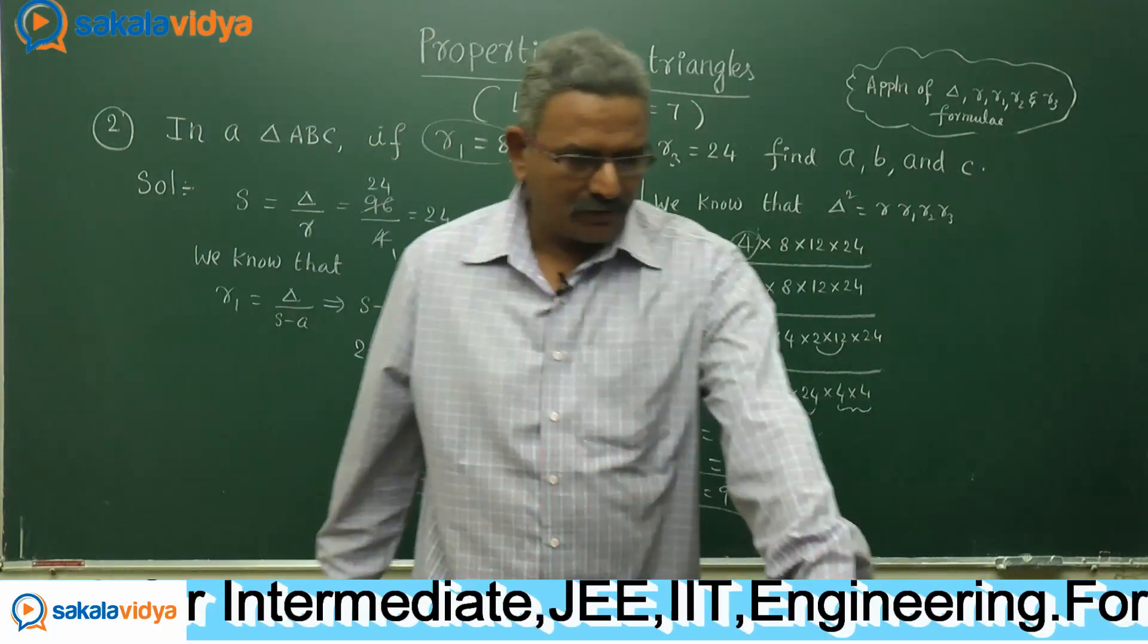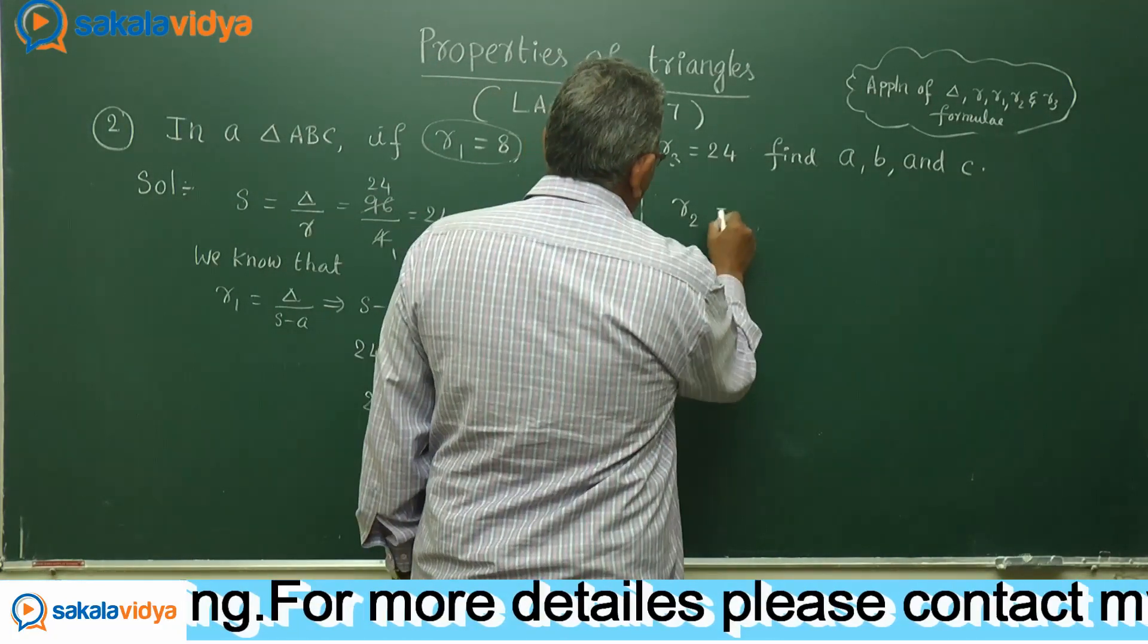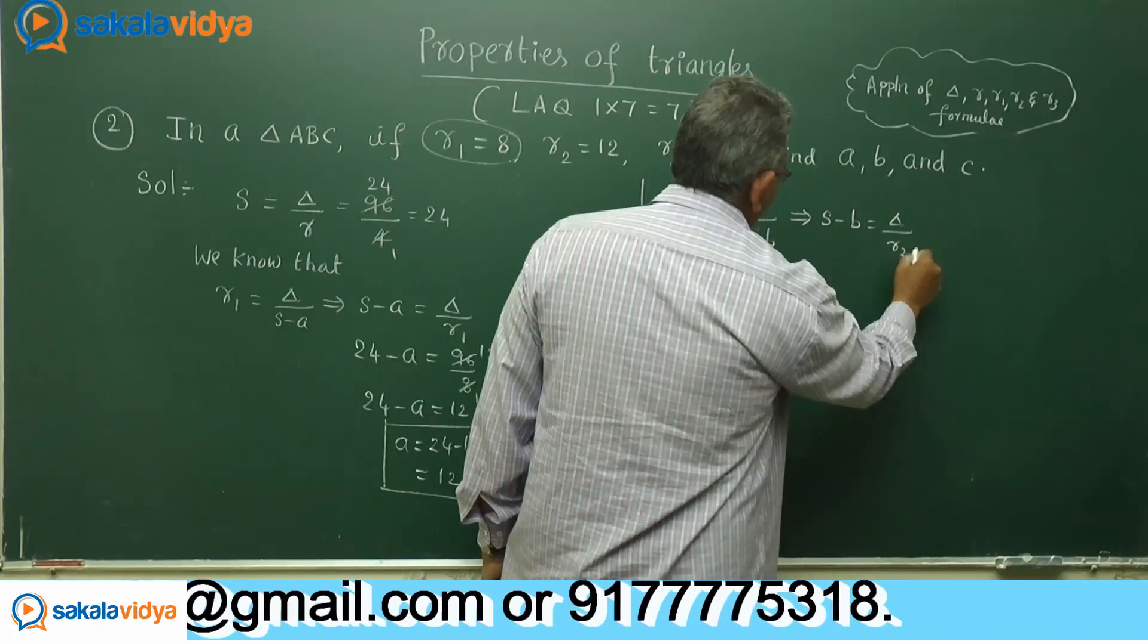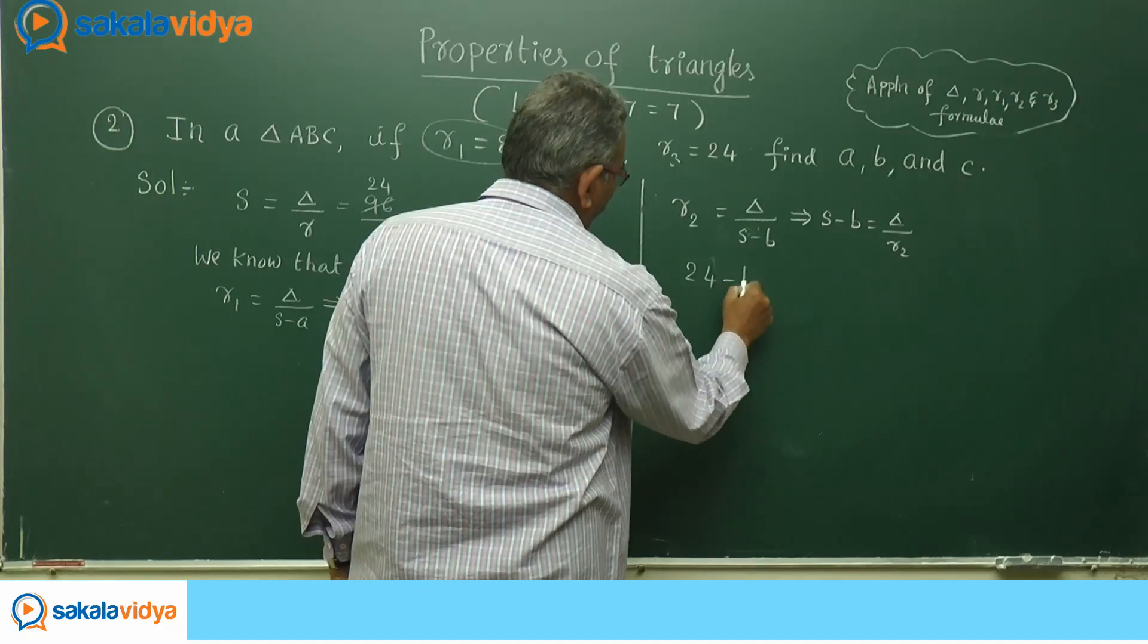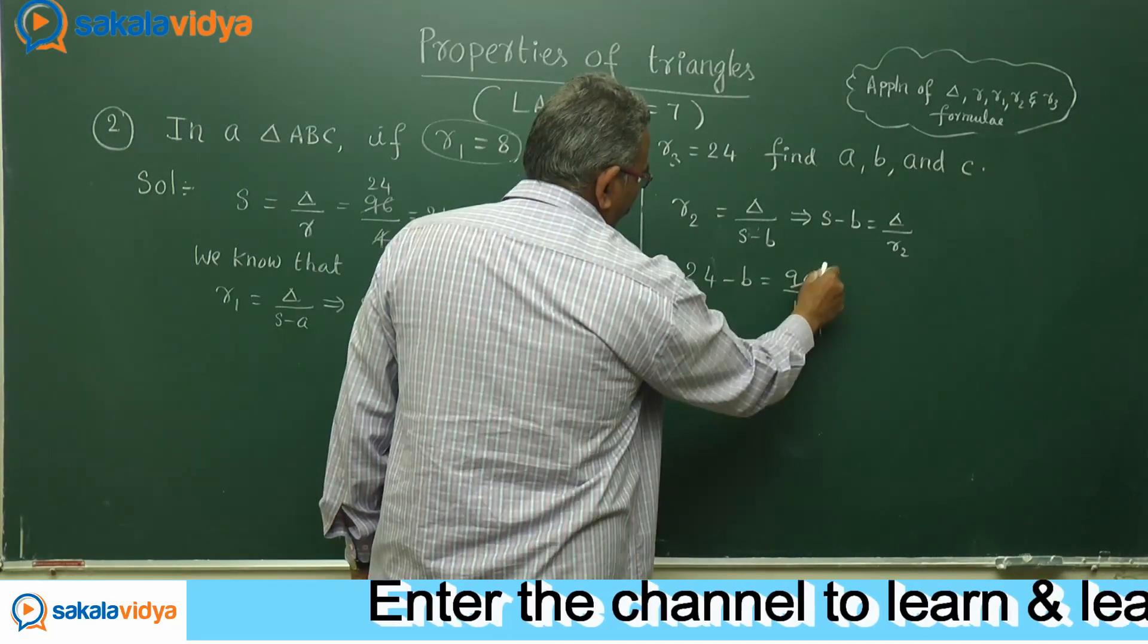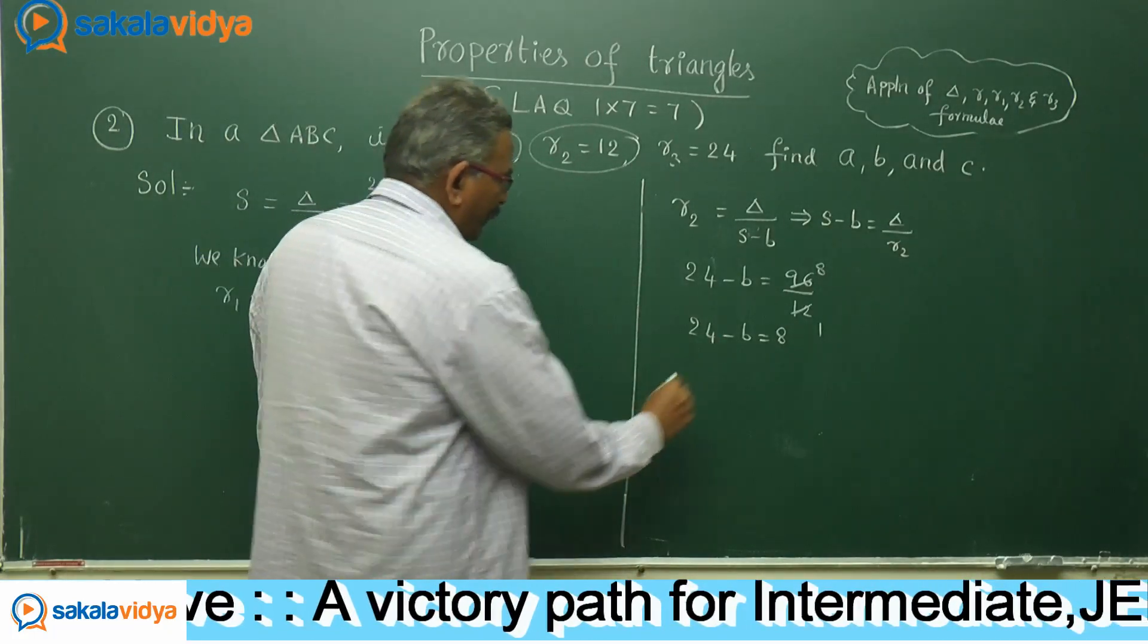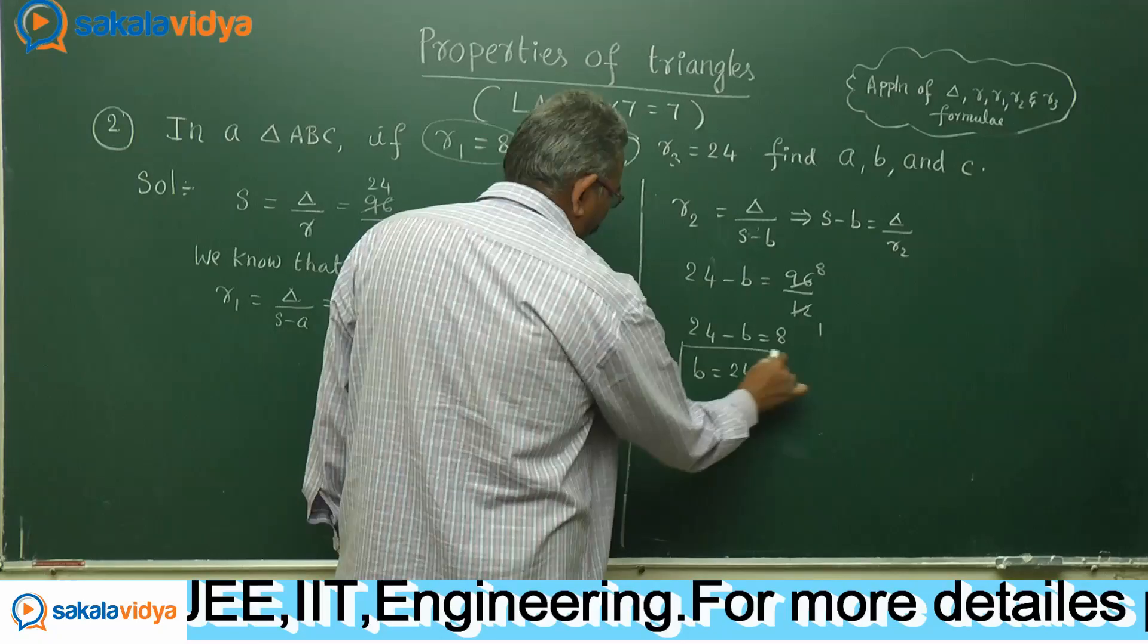Now let us find out R2. R2 equals delta by S minus b. That implies S minus b equals delta by R2. S value is 24 minus b, delta is 96, R2 is 12. So 96 by 12 equals 8. 24 minus b equals 8. This is a linear equation in one variable b. b equals 24 minus 8, which is 16. b value has been obtained.